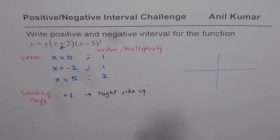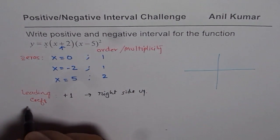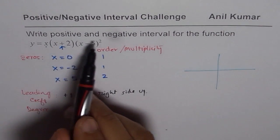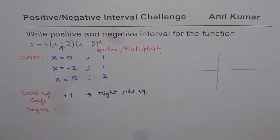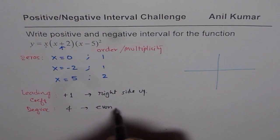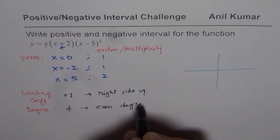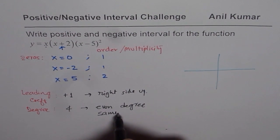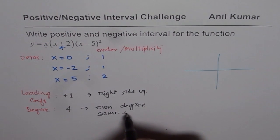And we also have degree. Let's write down degree of this function. Degree of this function is 1, 2, and 2, so degree 4 is even degree. And that tells you that both sides are same. Same sides. That means both are upright, same sides.